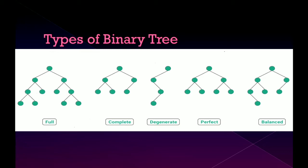And finally Balanced binary tree. It is a binary tree in which height of the left and the right subtrees of every node may differ by at most one.